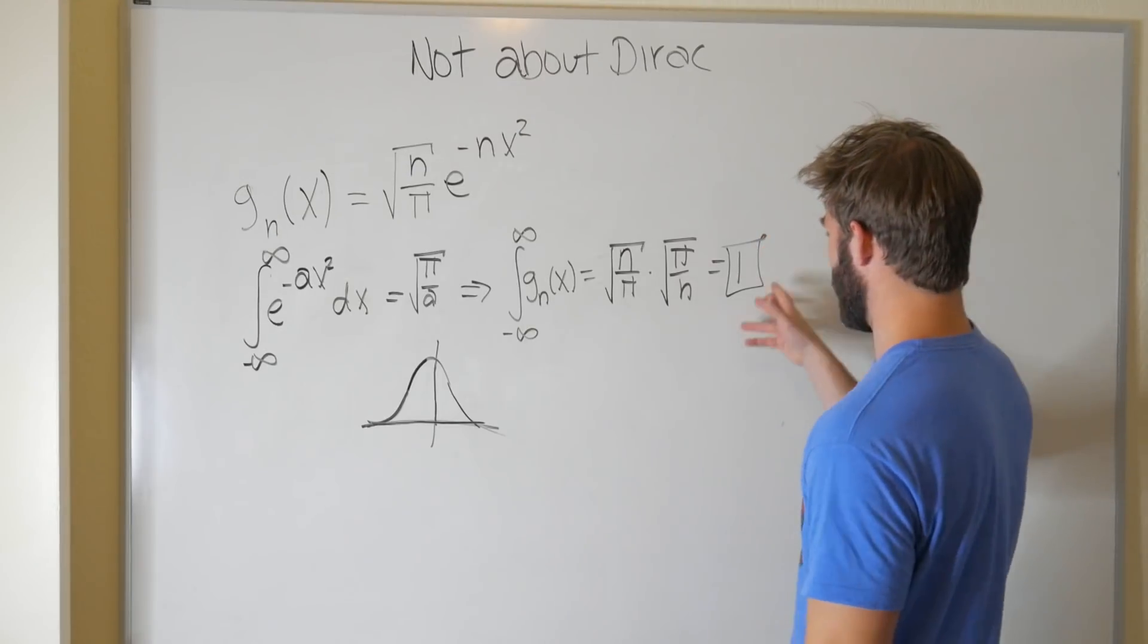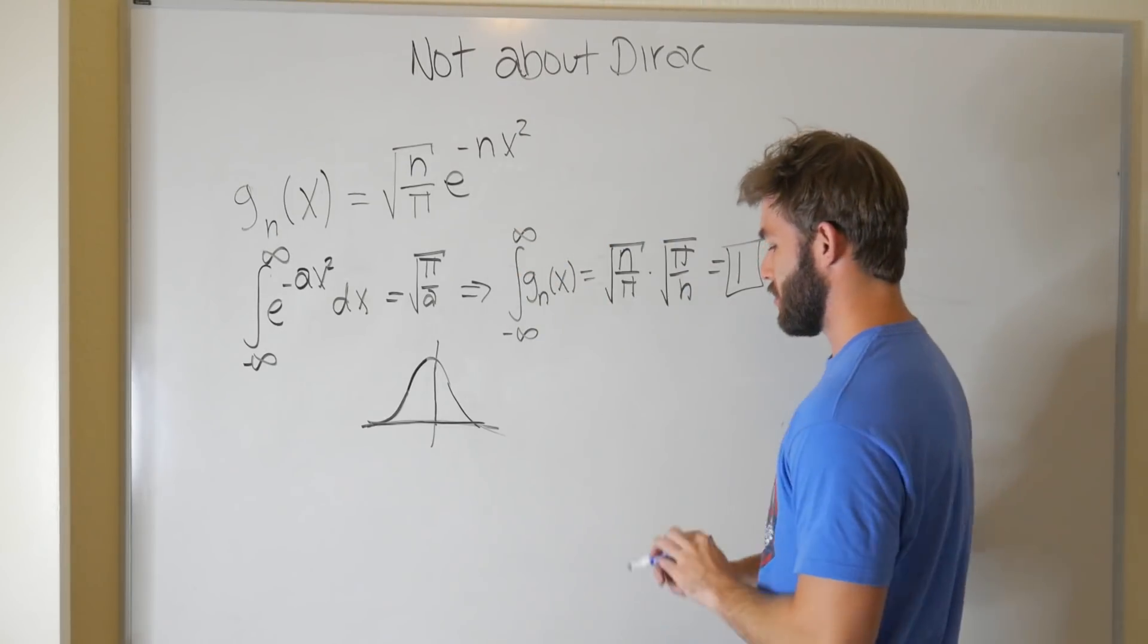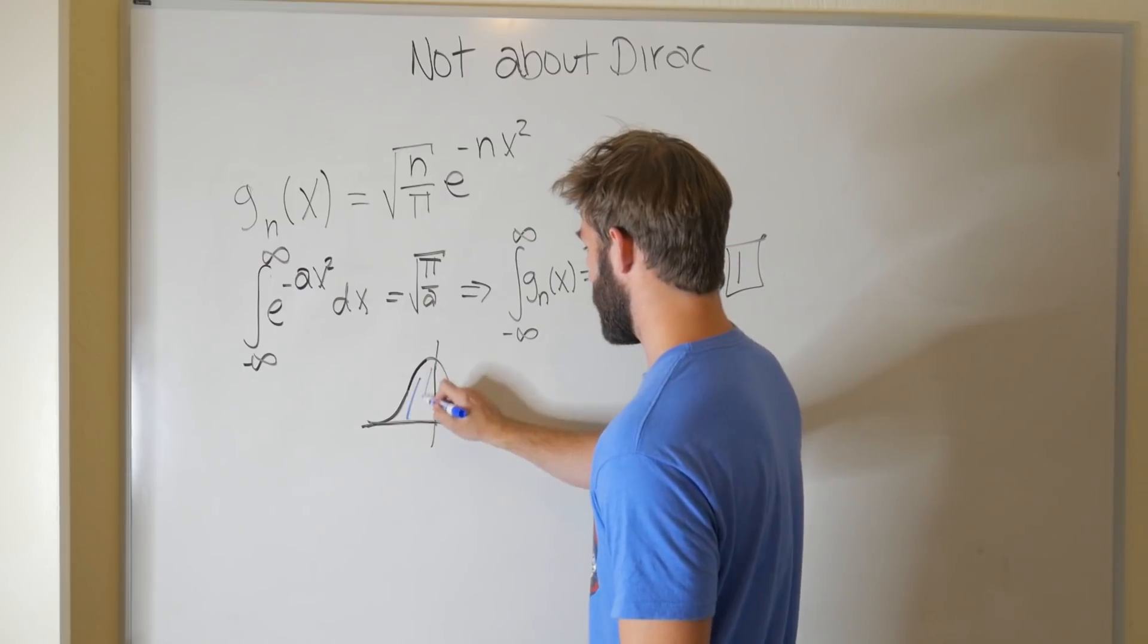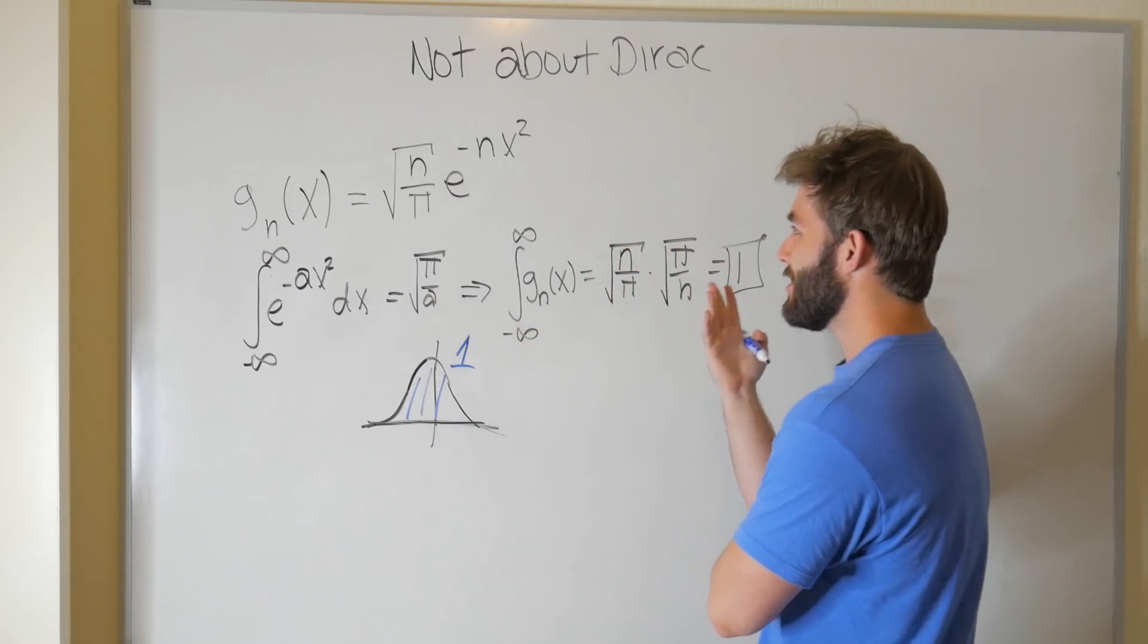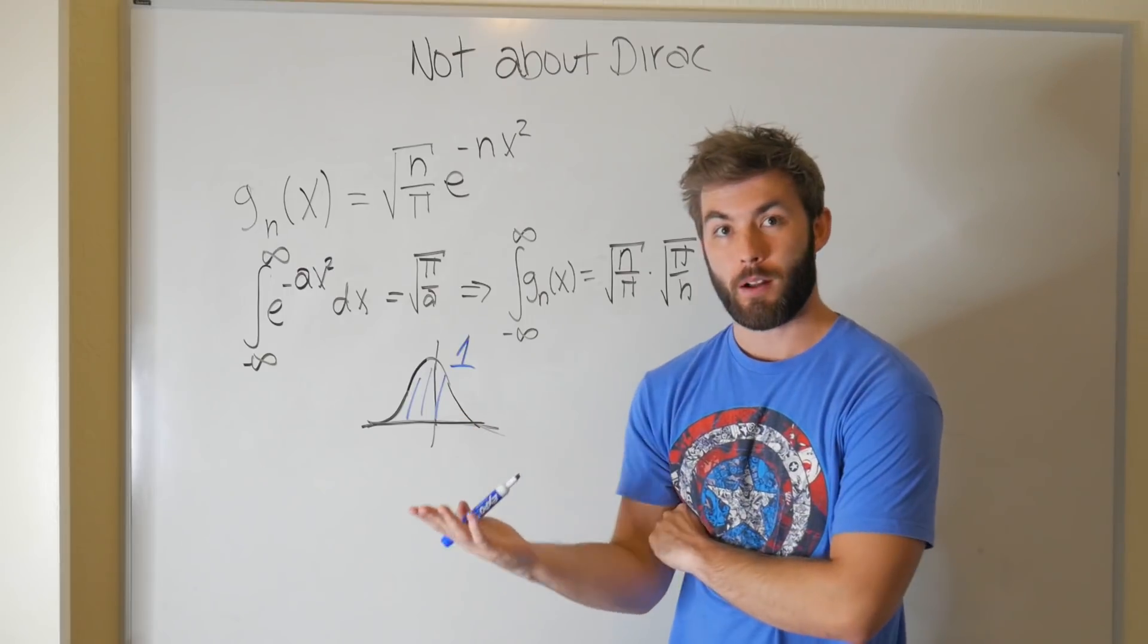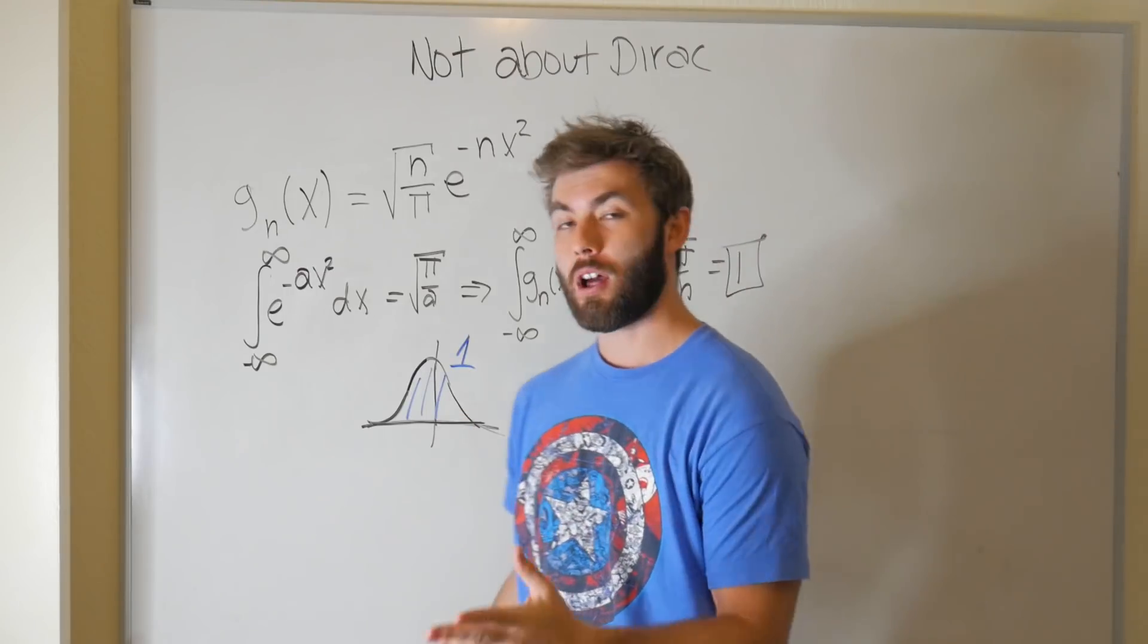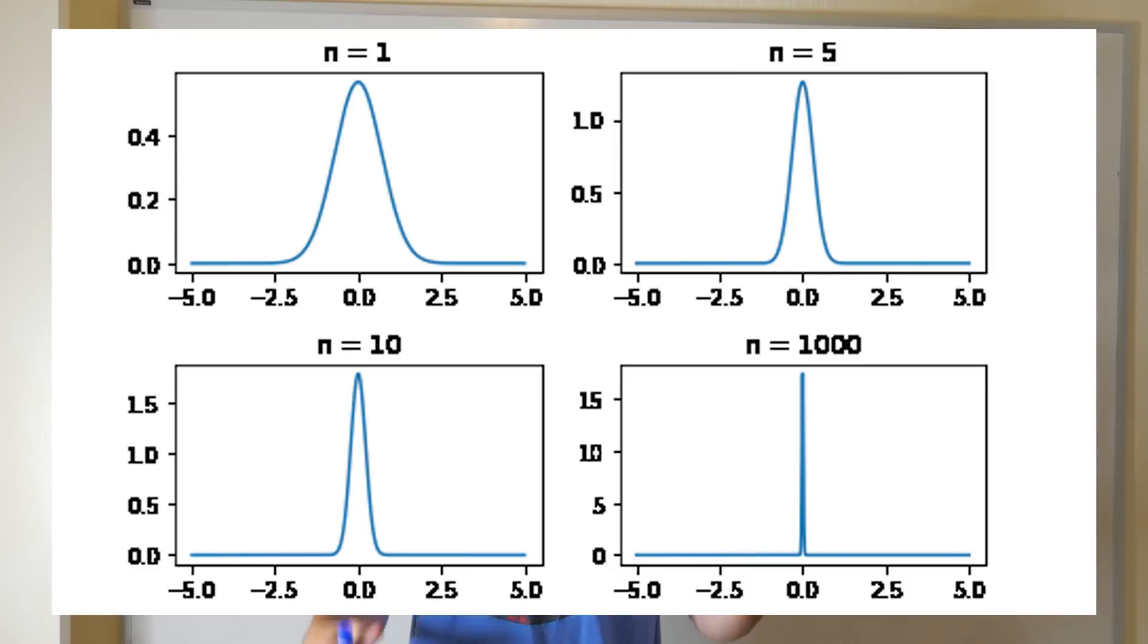Now I don't know about you, but I think that that is a pretty cool result. Changing n doesn't change the actual area under the curve. The area will still be one, but changing n does change the shape of the plot. And I've taken the liberty of plotting out a couple cases in Python, which you are now seeing. And as you increase n, the shape of the plot becomes more and more steep.